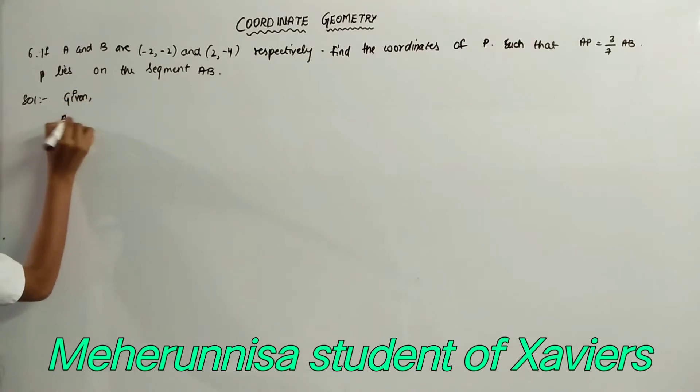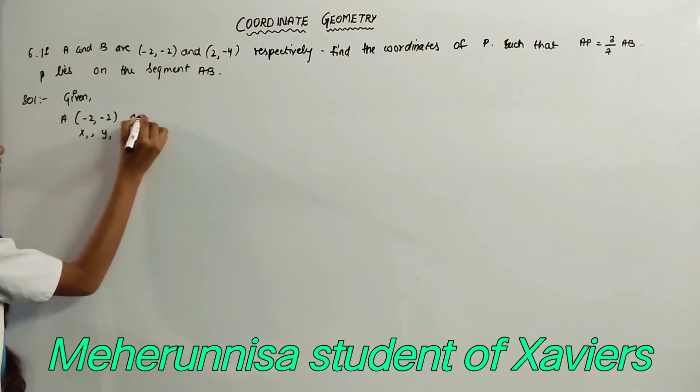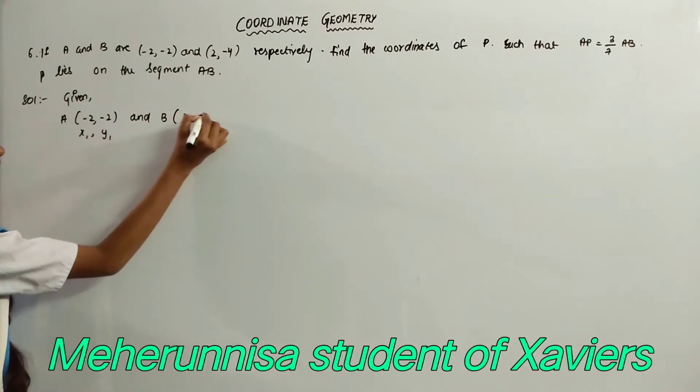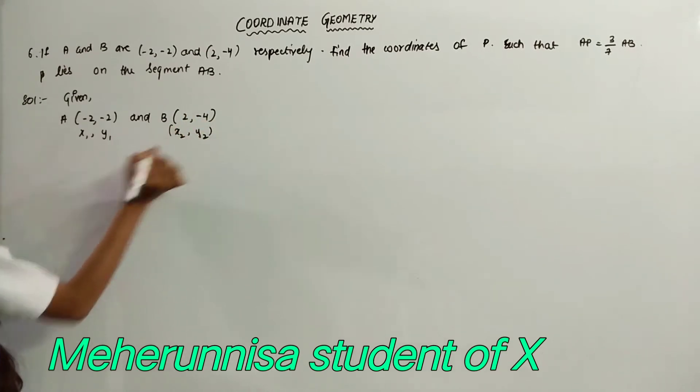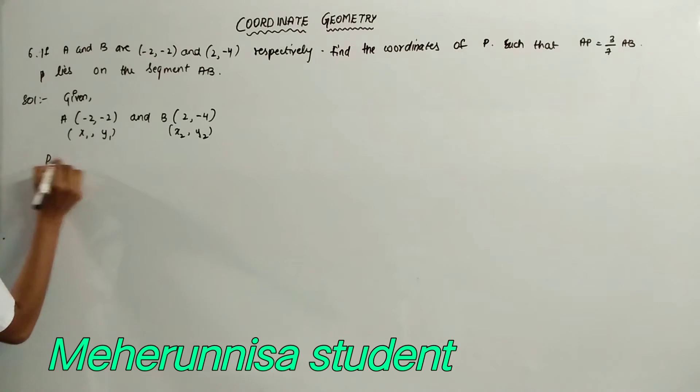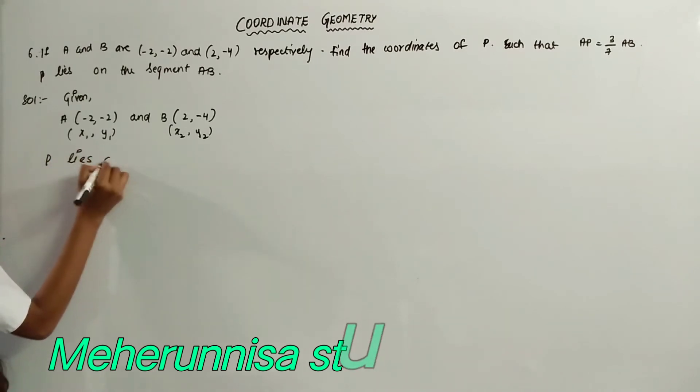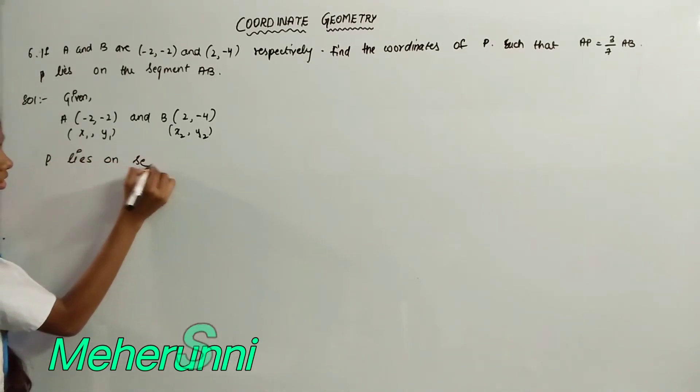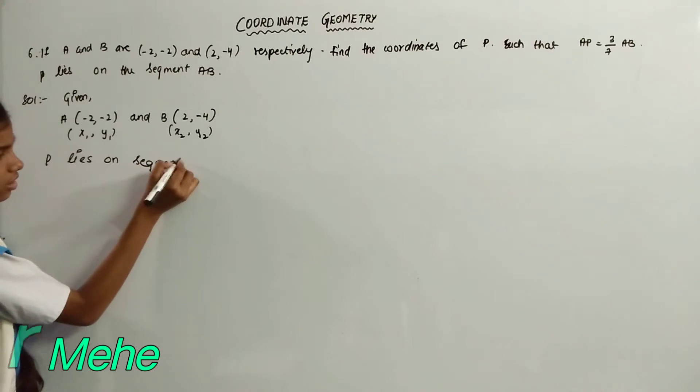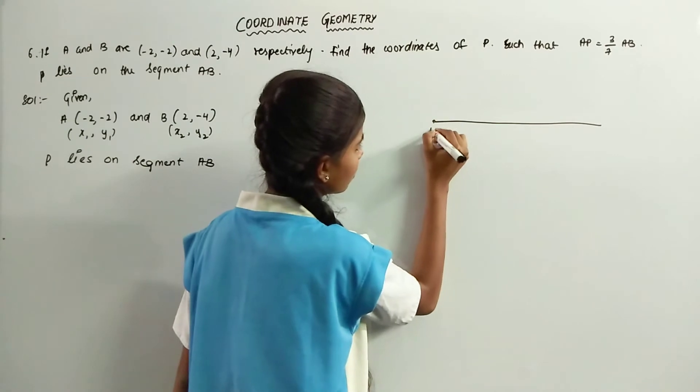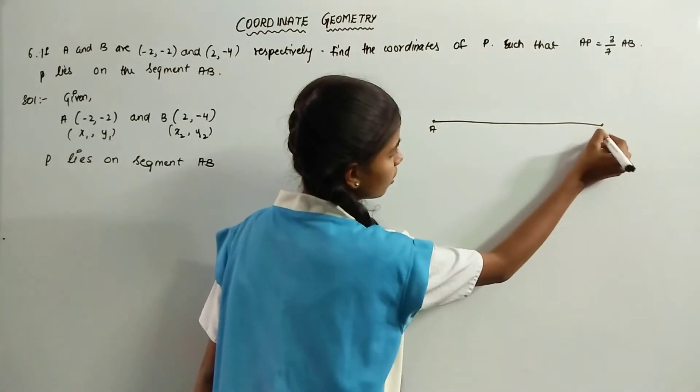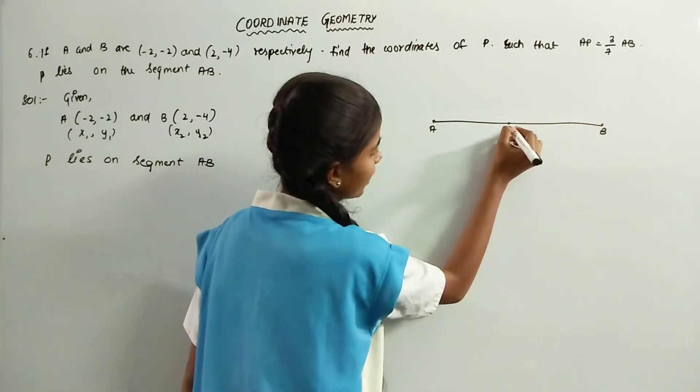Given A is minus 2 comma minus 2, that is x1 comma y1, and B is 2 comma minus 4, that is x2 comma y2. Given that P lies on segment AB. This is the segment AB on which P lies.